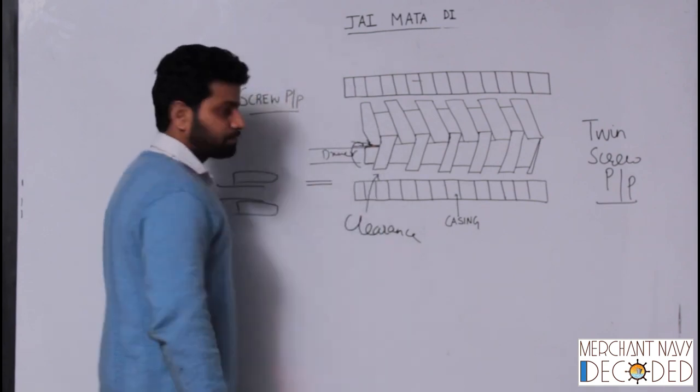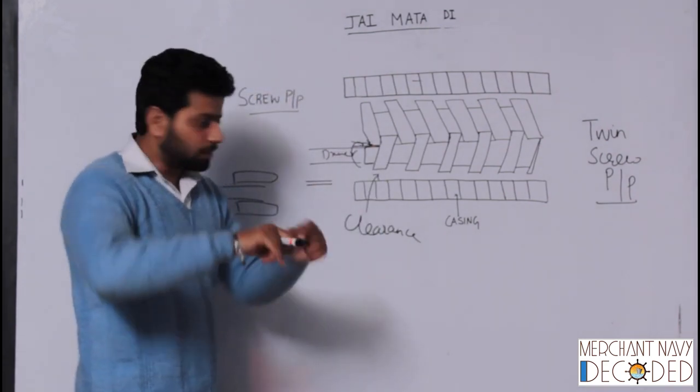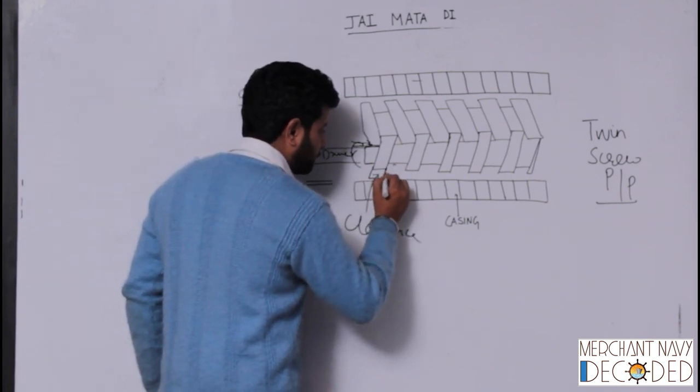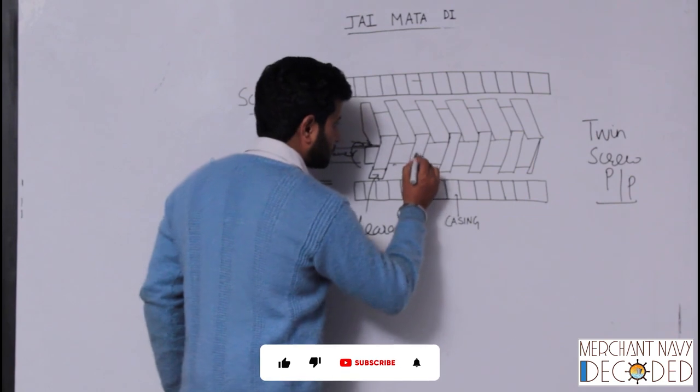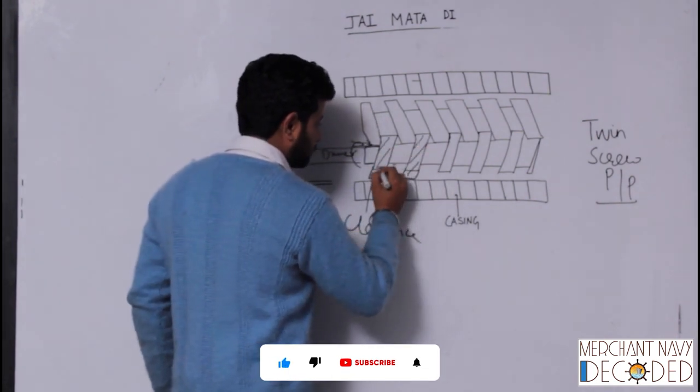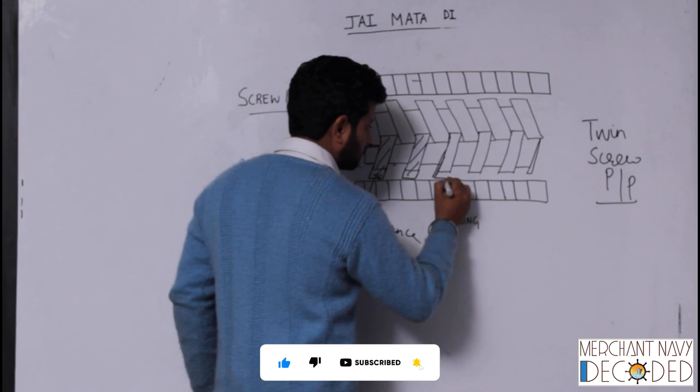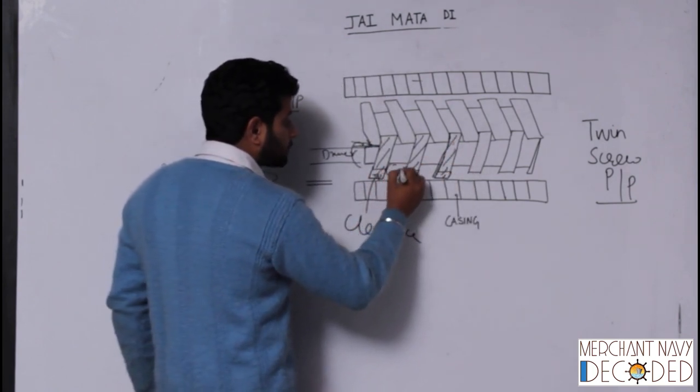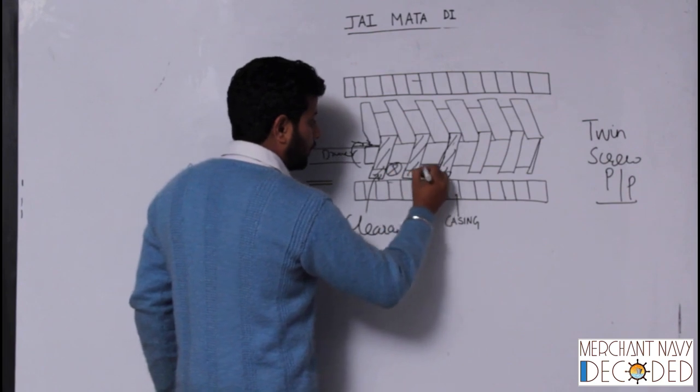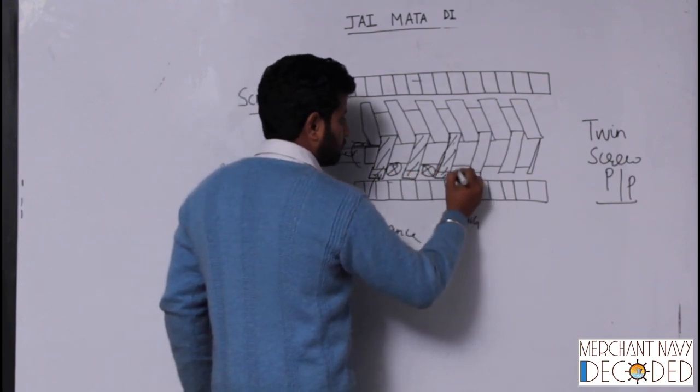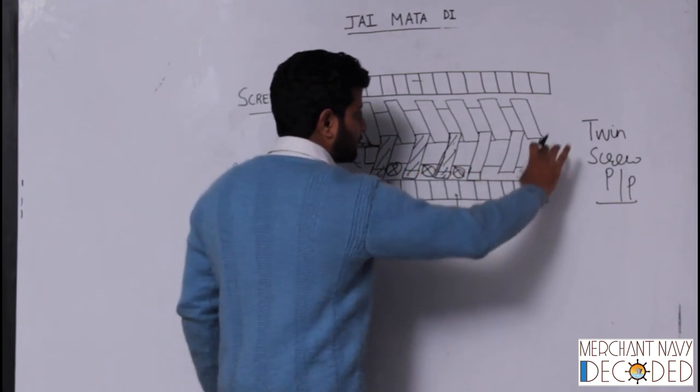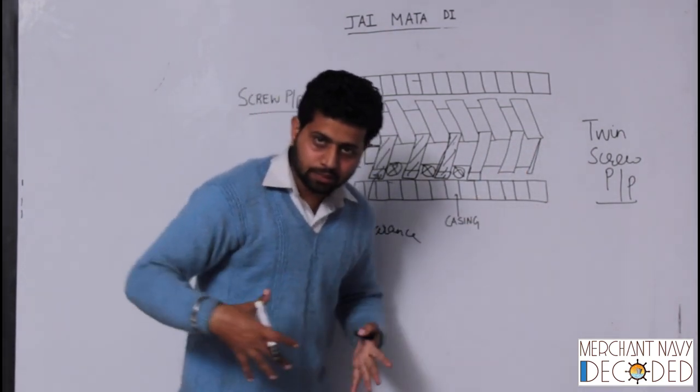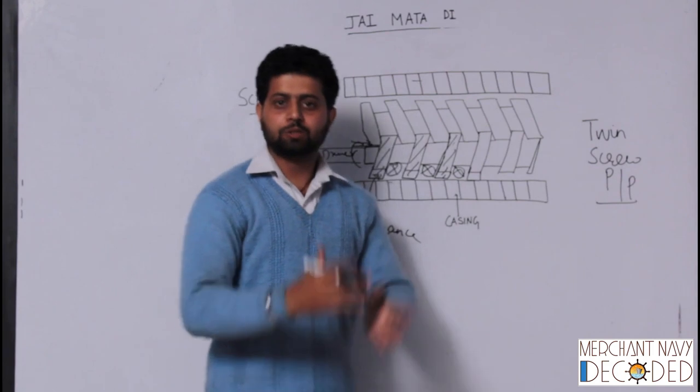And when it rotates, oil is trapped over here. So let me show you the current platform. It is like this: the clearance is less, oil is over here, oil is over here, oil goes over here. And when it reaches over here, again as in gear pump, the area reduces and discharge takes place because pressure increases.